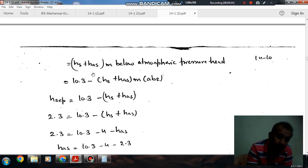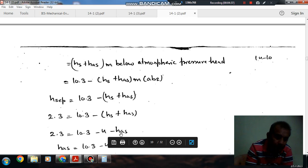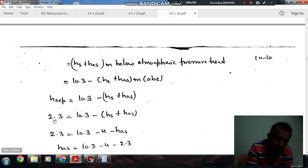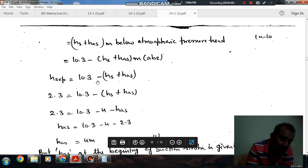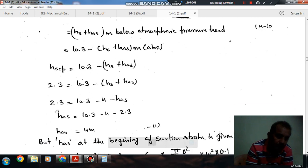And this is below atmosphere head. At the beginning of the stroke, it is 10.3 minus this head because in the suction pipe we have to spend some energy to accelerate the fluid, which will generate some head. So the fluid head at the inlet of the suction stroke will be atmospheric head minus this head. This Hs is given as 4 and Has is unknown. If we want to avoid separation, then this head should not fall below 2.3.